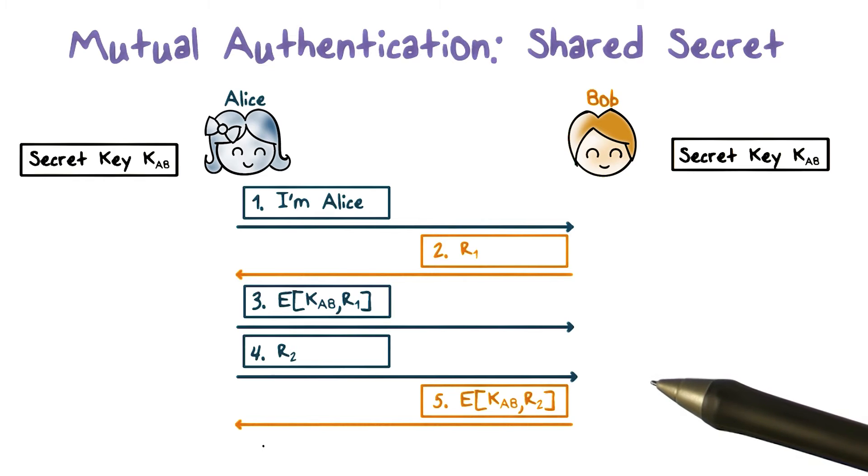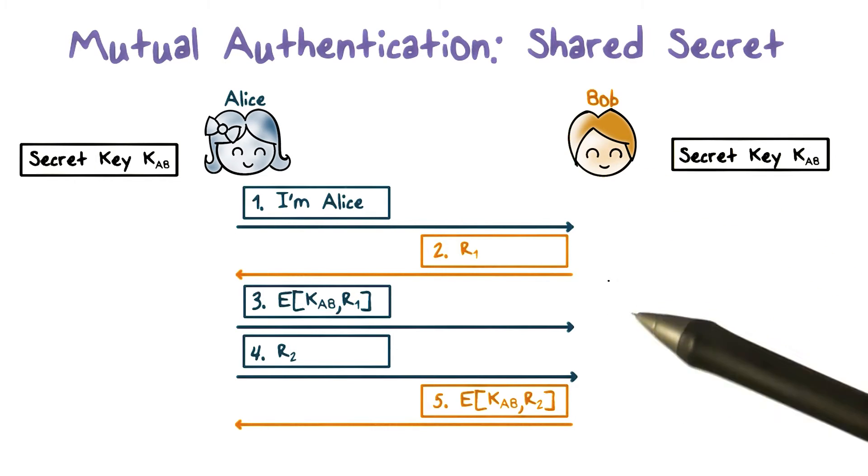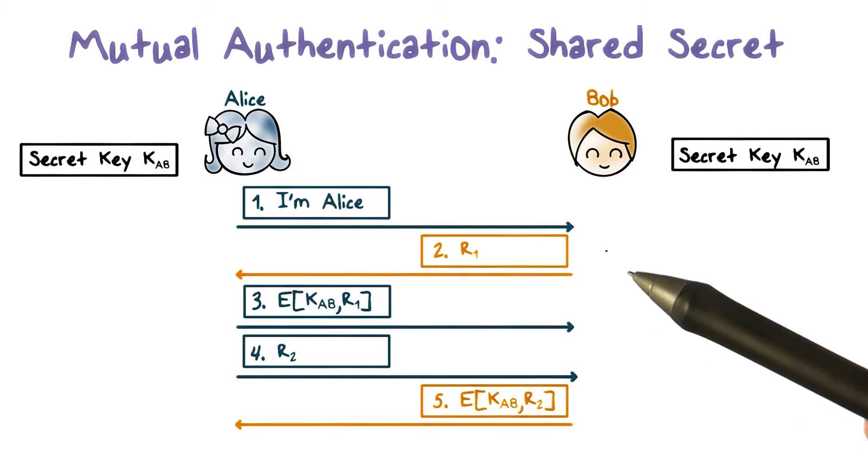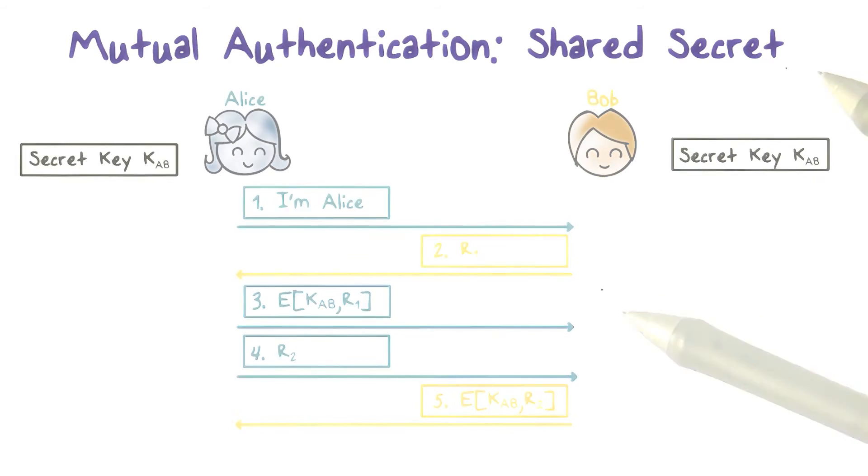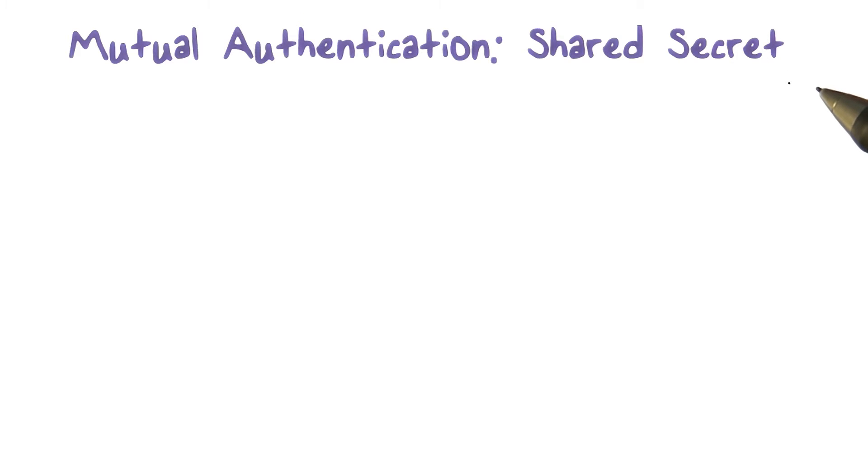Note that if only one-way authentication is required, for example, Alice is a client and needs to authenticate to Bob, which is a server, but Bob does not need to authenticate to Alice, then only the first three steps are necessary. And if Alice is a human user, then typically the key KAB can be derived from a password hash, which is known to Bob.